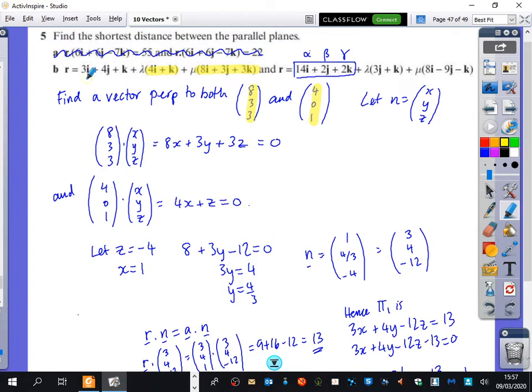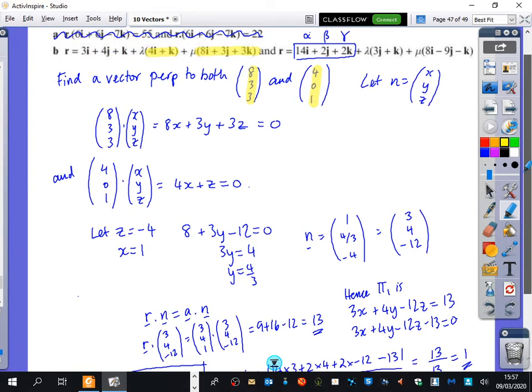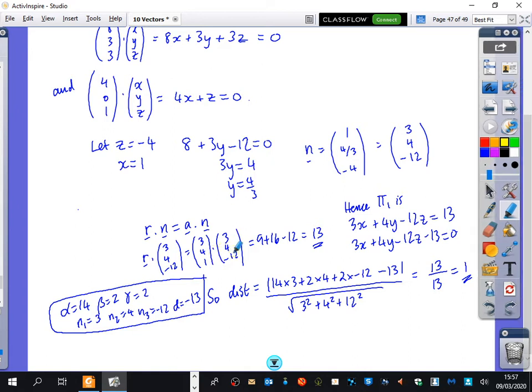Because I can see that it must be on the plane. And I do that multiplied by, or dotted with n, which gives me 13. So then the equation of the plane is 3x plus 4y minus 12z equals 13.